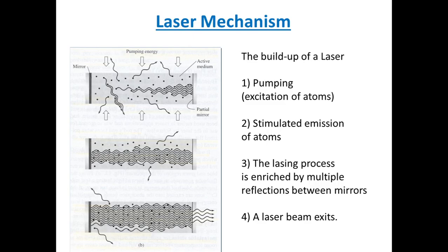First, let us understand the laser mechanism. To build up a laser there are four processes required: first is pumping, that is excitation of electrons; second is stimulated emission of atoms or electrons; third is the lasing process enriched by multiple reflections between the mirrors; and lastly, a laser beam exits.